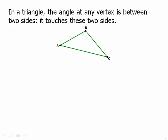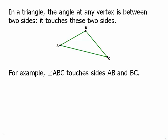In a triangle, the angle at any vertex is between two sides. It touches those two sides. Or you could say it's adjacent to those two sides. For example, angle ABC, the angle right here, touches side AB and side BC. It's adjacent to those two sides.